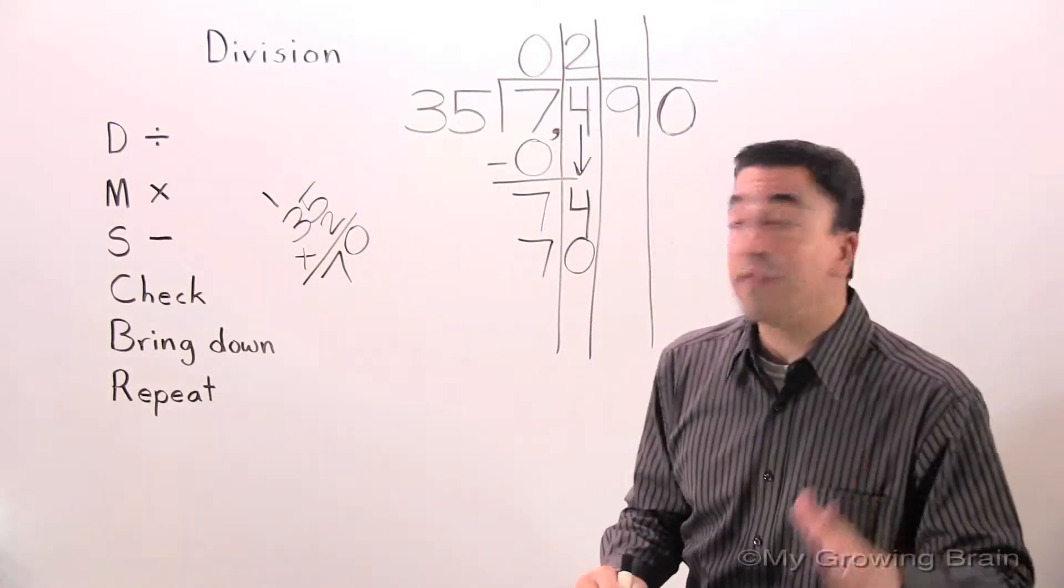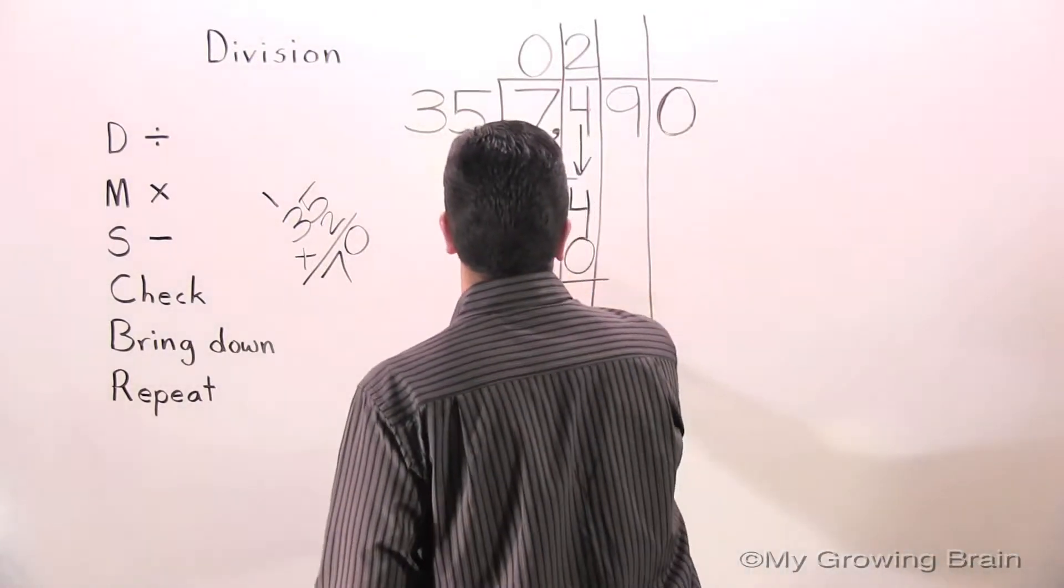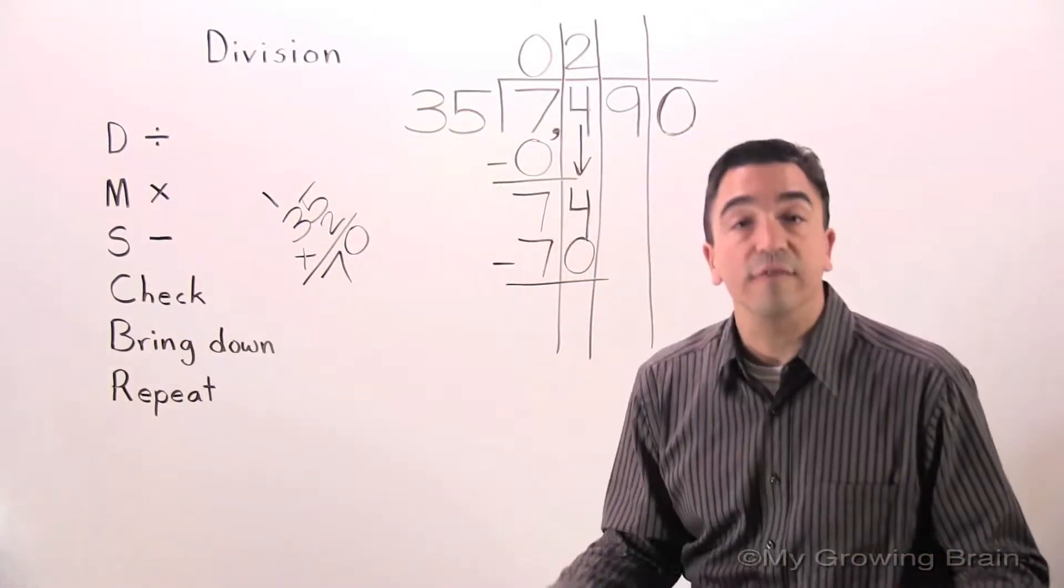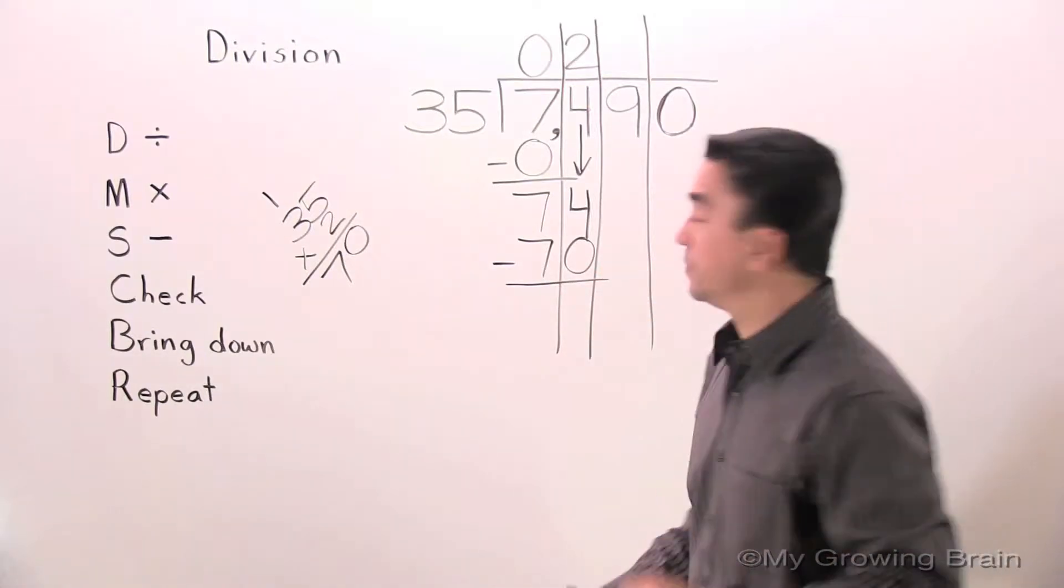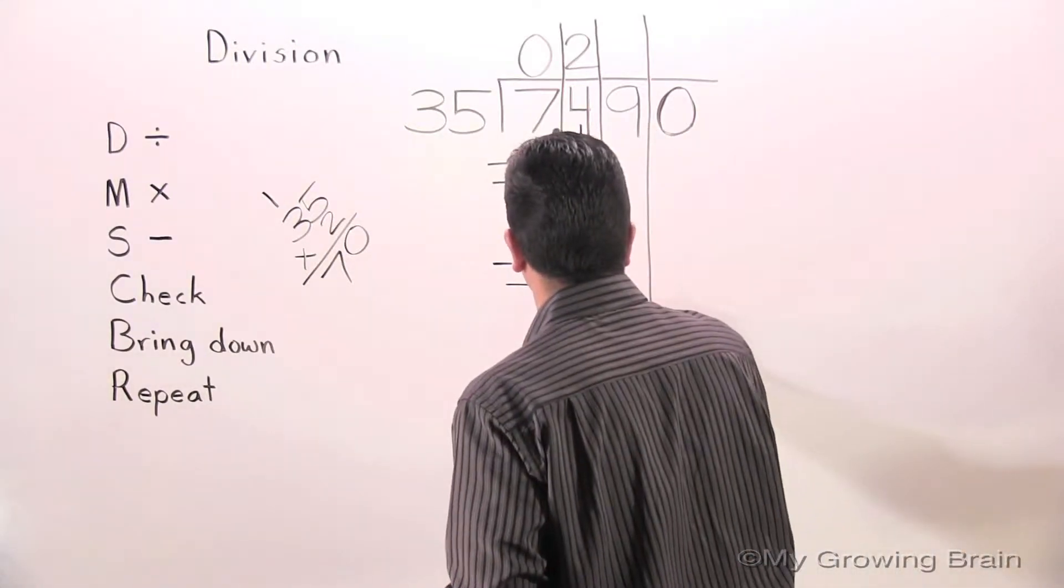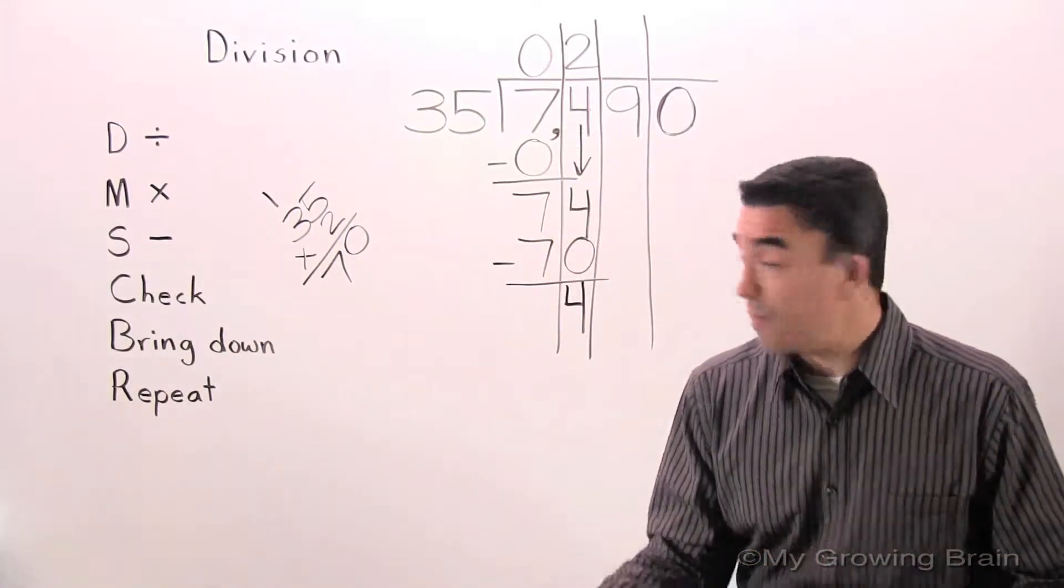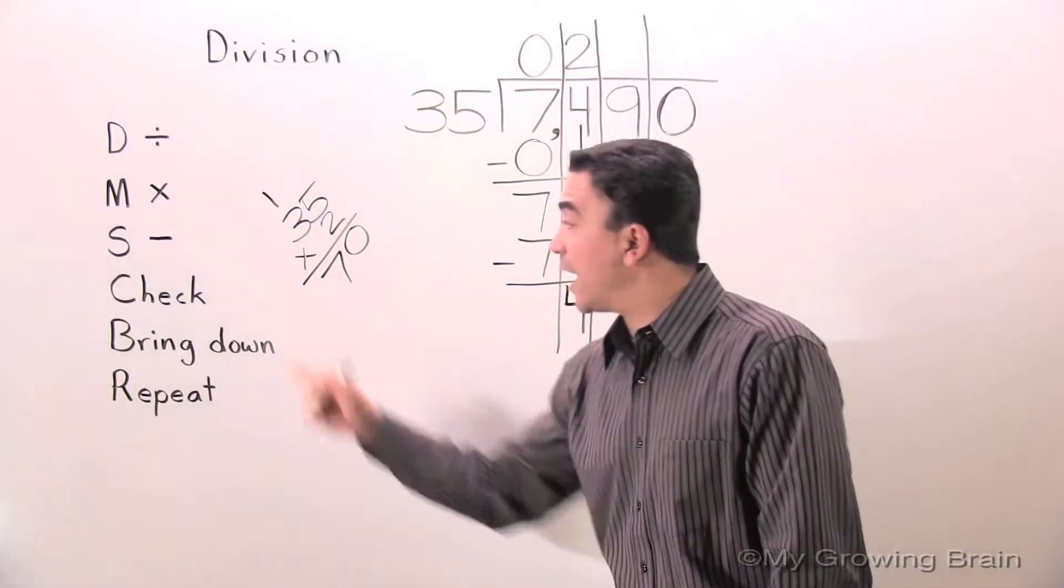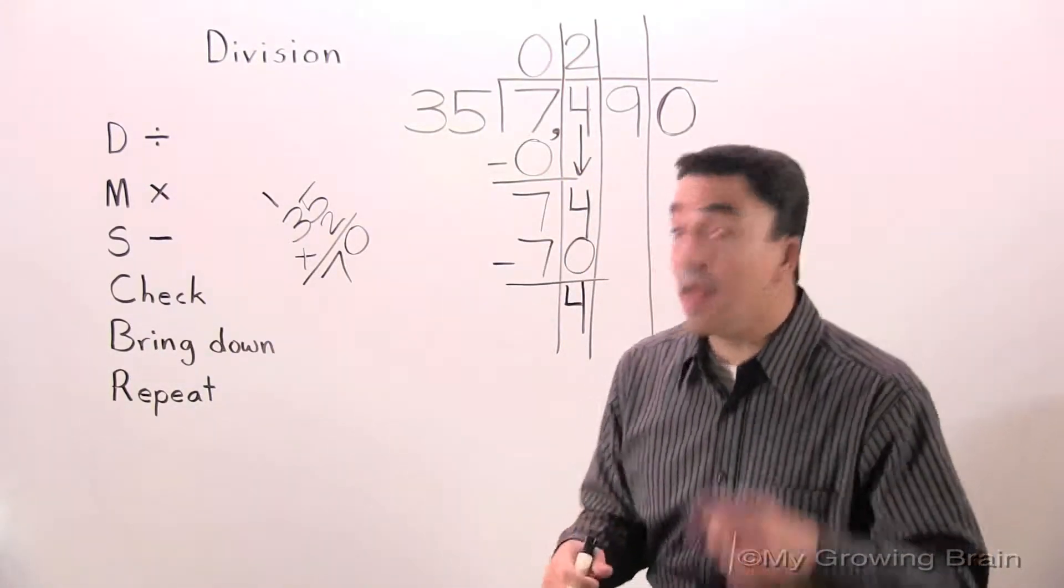Next step. Subtract. 74 minus 70 equals 4. Next step. Check. 4 is less than 35. Keep on going.